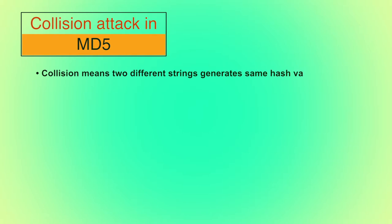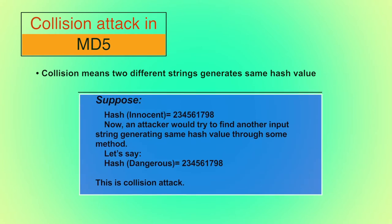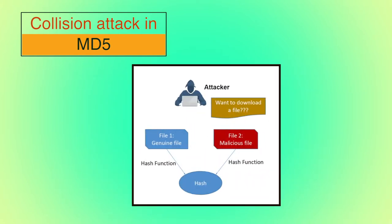What is a collision attack in MD5? Collision means finding two different input strings of a hash function that produce the same hash value. Suppose we compute the hash of the string 'innocent,' which gives 234561798. An attacker would try to find another input string generating the same hash value — say he finds 'dangerous,' which also computes to 234561798. This is a collision attack. If the attacker was offering a file download and showed its hash to prove integrity, he could switch out the file for a different one with the same hash, and the downloader would be unable to know the difference.